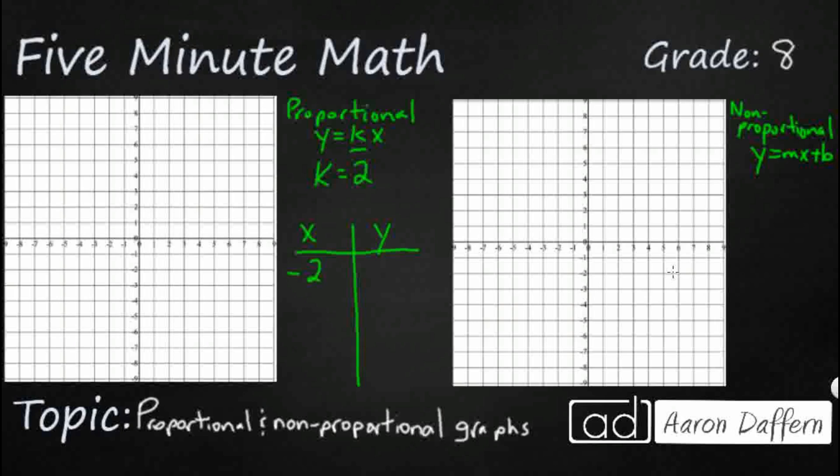So x, let's just say negative 2, negative 1, 0, 1, and 2. We'll end up doing the same thing with the non-proportional as well. So if we put that through our constant of proportionality of 2, we're just going to double it. That's going to be negative 4, negative 2, 0 doubled is still 0, and that's 2, and that's 4.